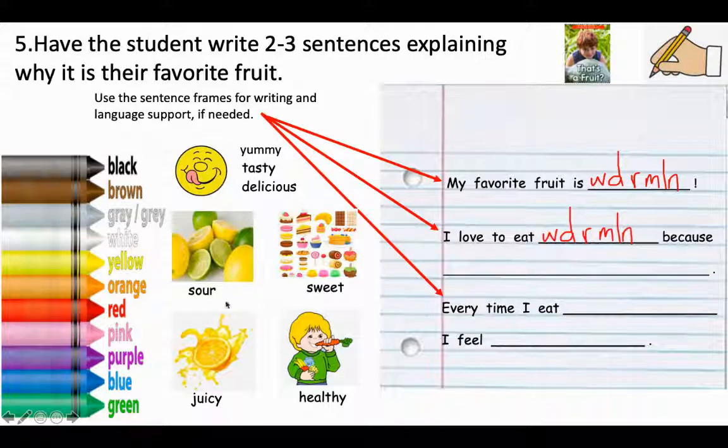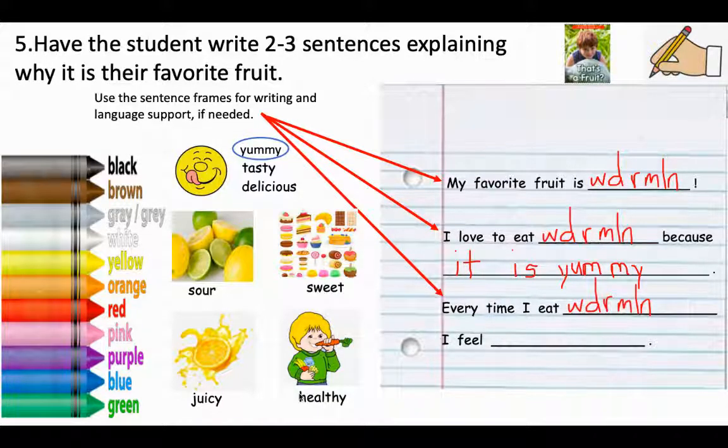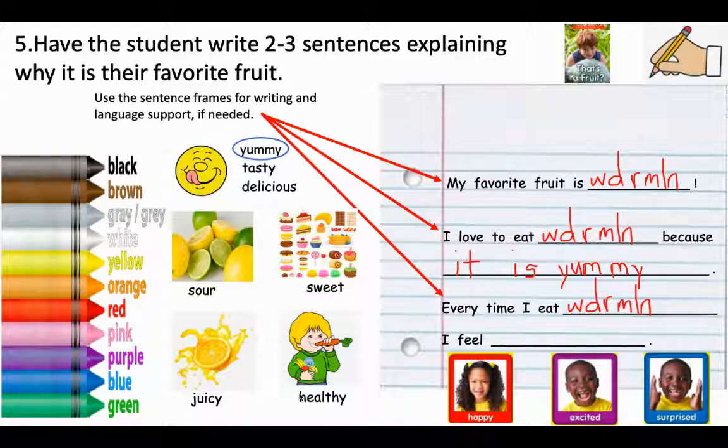Yummy, tasty, delicious, sour, sweet, juicy, healthy. I wrote, I love to eat watermelon because it is yummy. Every time I eat watermelon, I feel happy. So, I'm going to use happy and write happy. You can use these vocabulary words to help write the sentences.